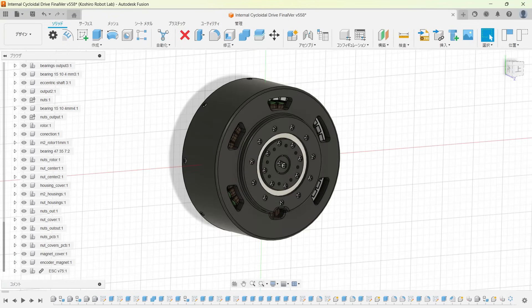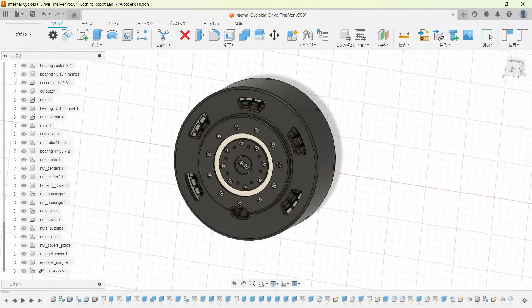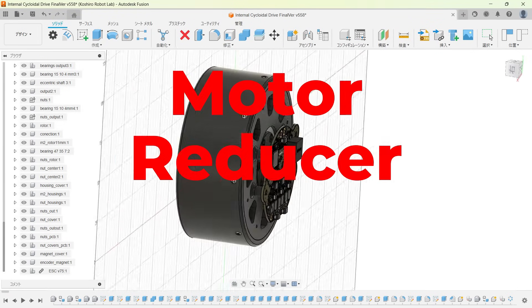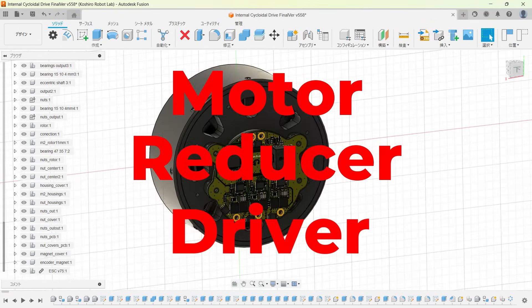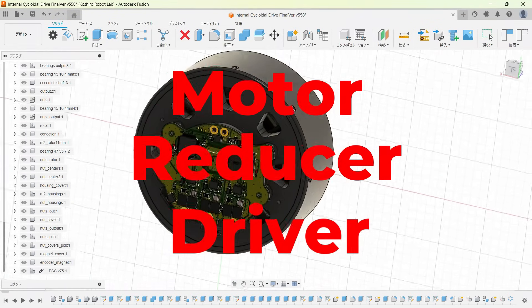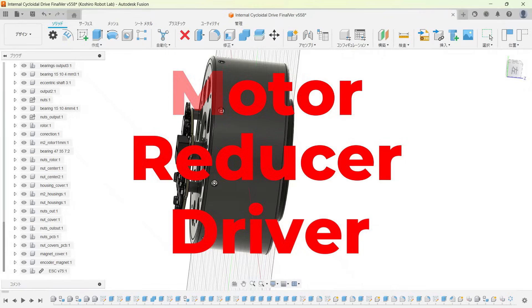Let's jump right in. When it comes to a robot's hardware, the three core components are the motor, the reducer, and the driver. The internal cycloidal drive combines these three elements in a highly integrated way.